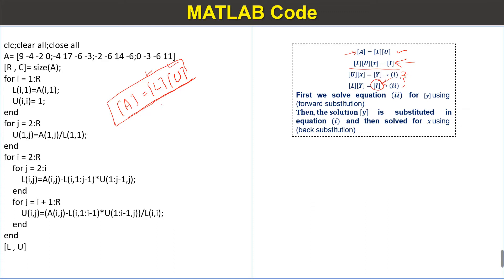We solve these two equations: first we solve equation two using forward substitution, where the column vector y is an arbitrary vector. The solution, column vector y, is then substituted into equation one and solved for column vector x using backward substitution.